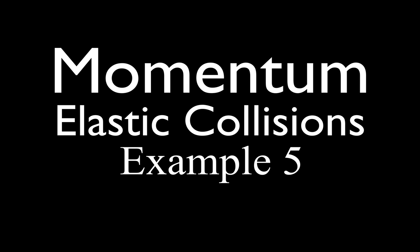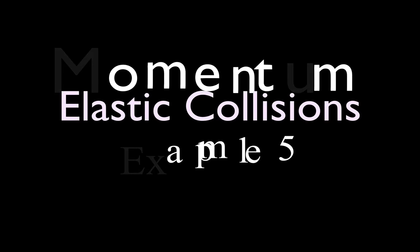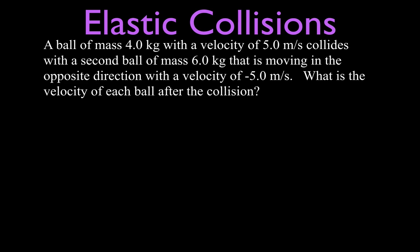Today's video is another video on momentum and elastic collisions — this is the fifth example. We have a ball with a mass of 4 kilograms and a velocity of 5 meters per second, and it collides with a second ball with a mass of 6 kilograms moving in the opposite direction with a velocity of minus 5 meters per second — one in the positive direction, one in the negative direction.